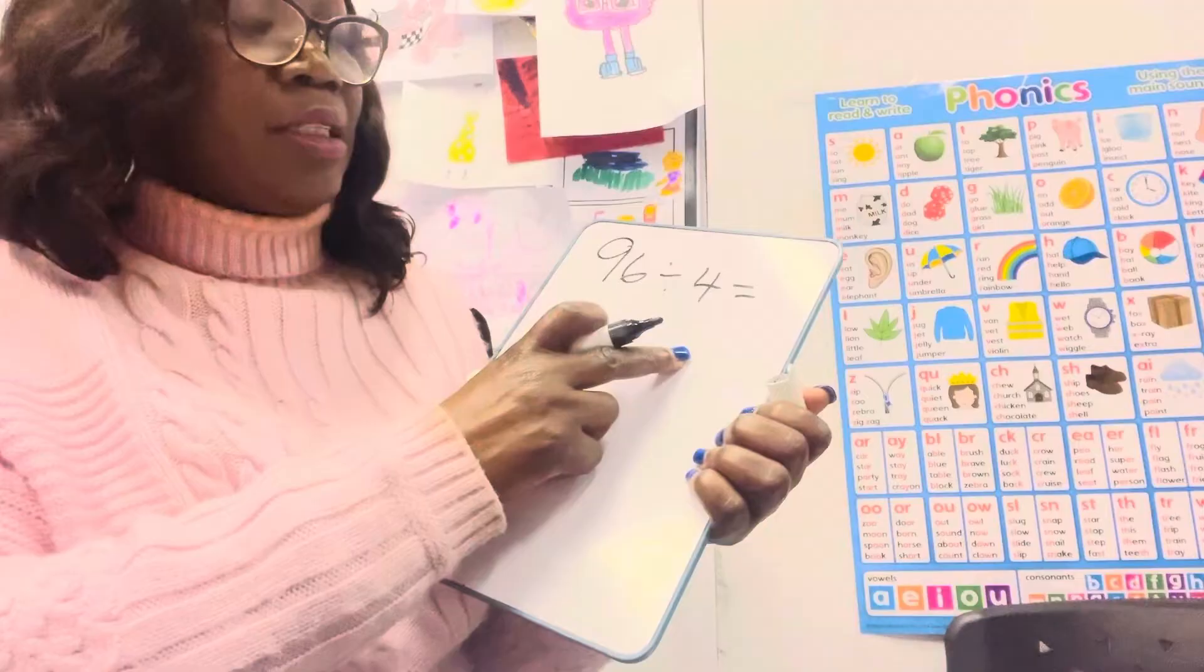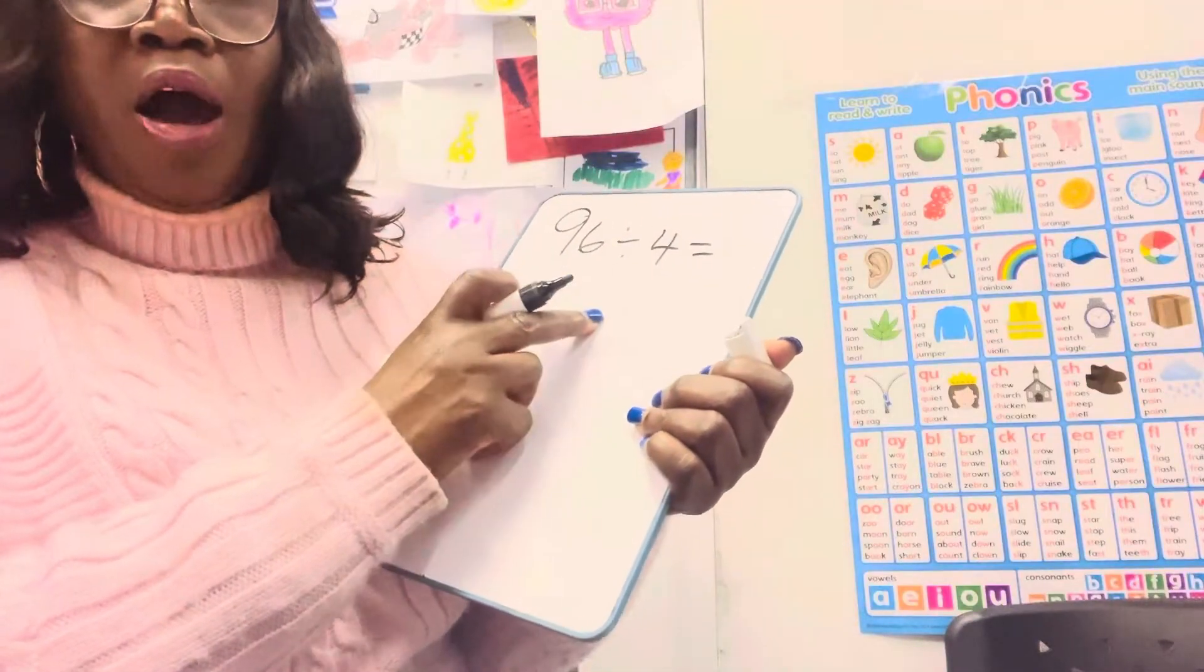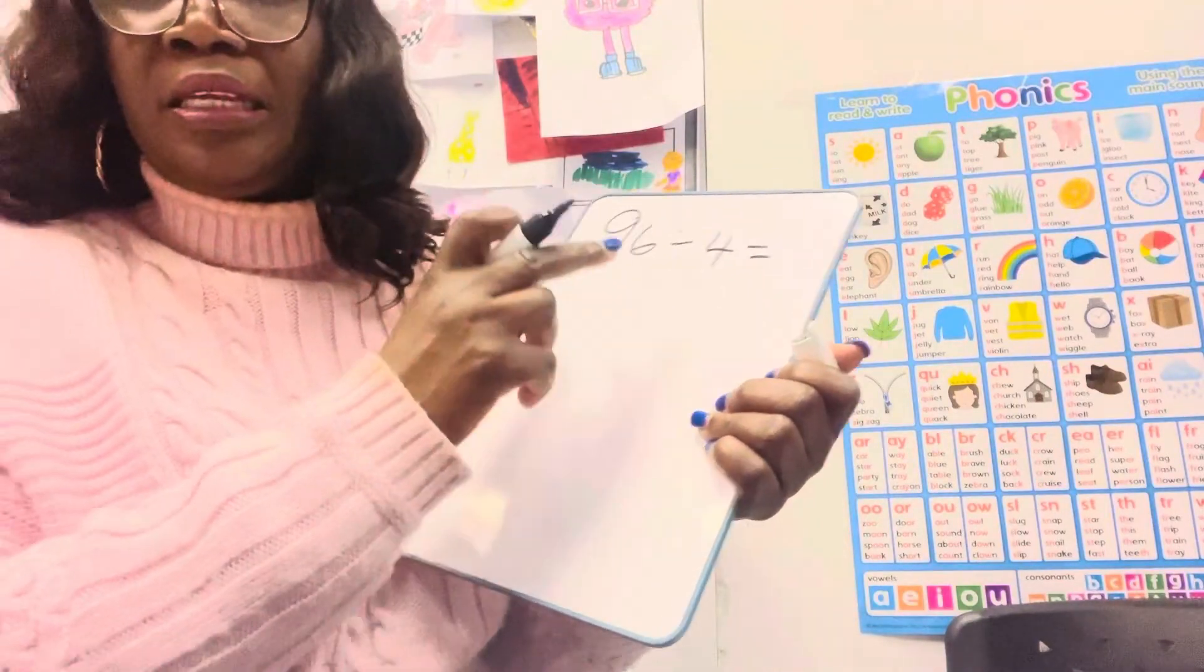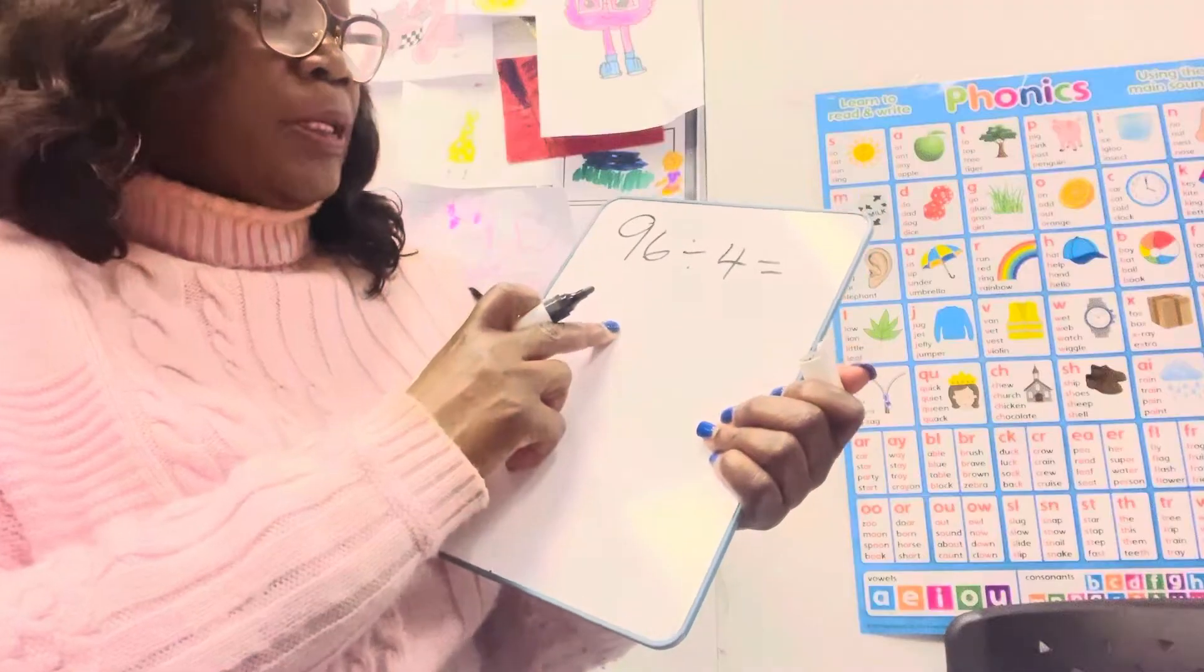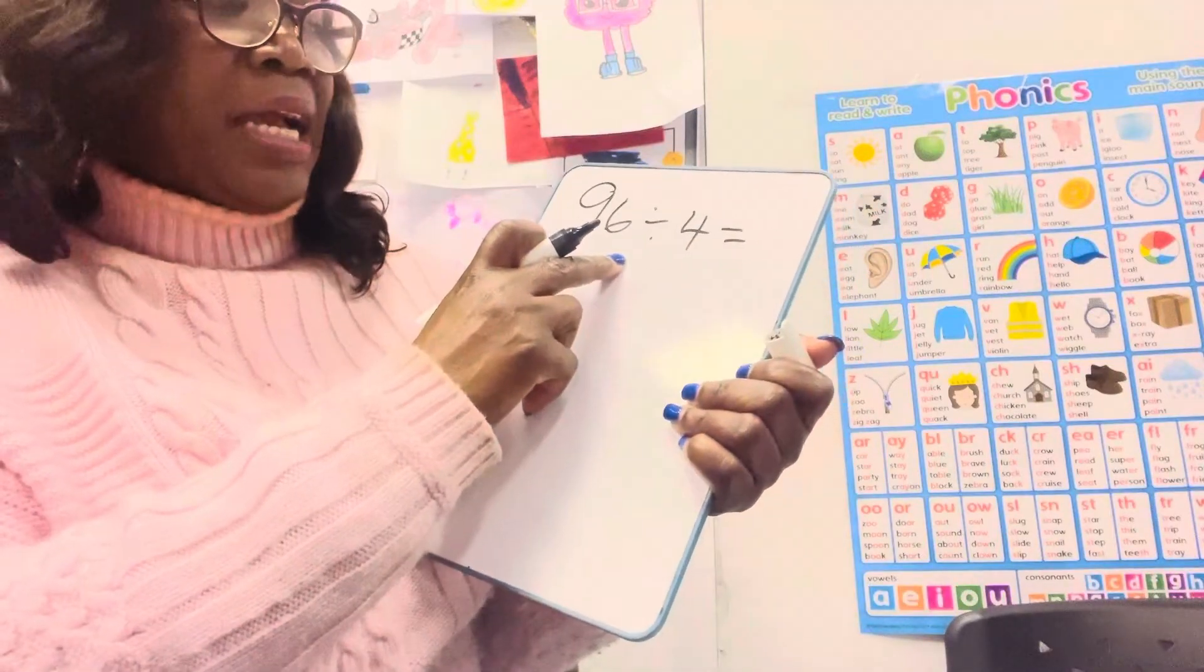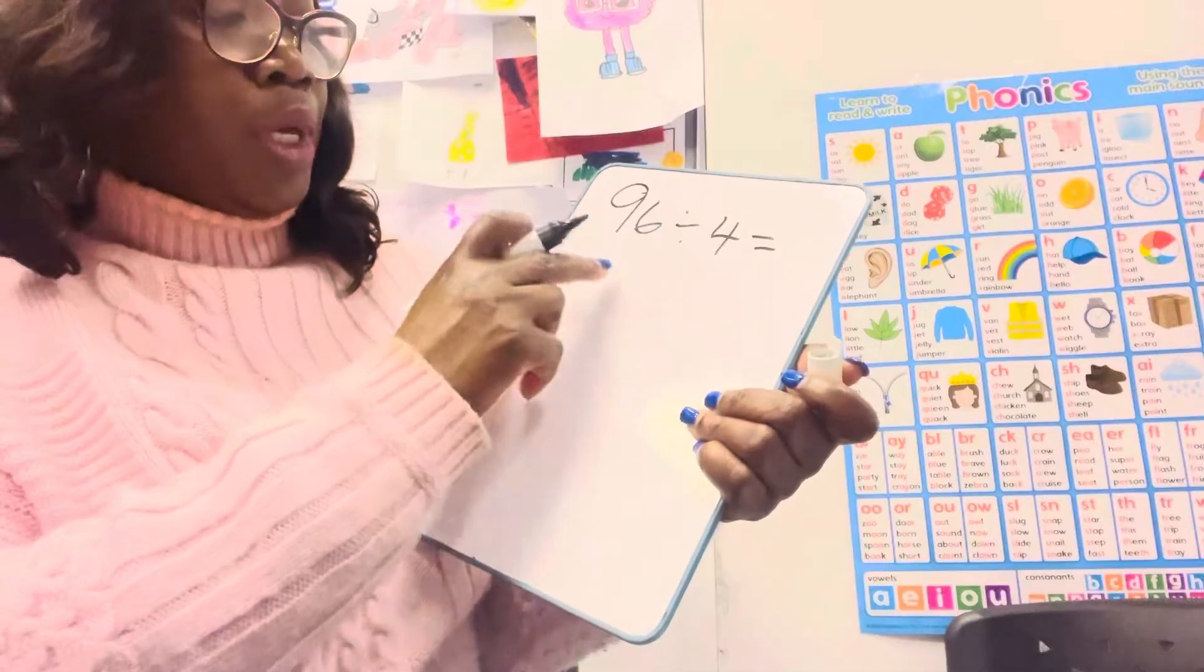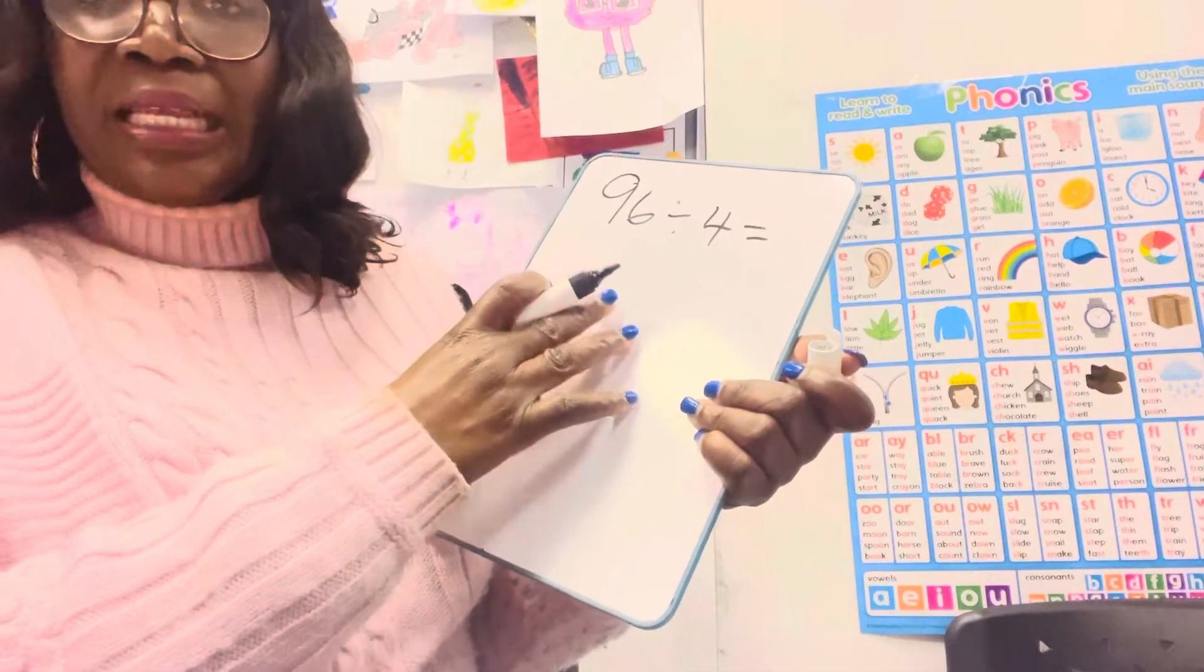So let's say you have 96 divided by 4. We could make it a part and a whole to split it. This is what I mean: we're going to draw a circle, write our 96 on top of here, and split the number into two.